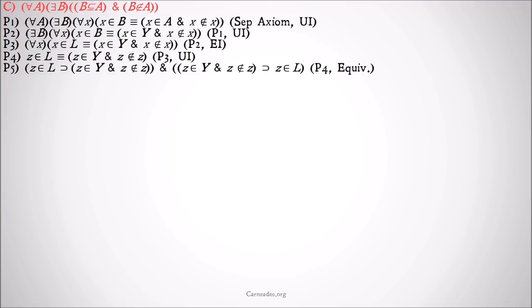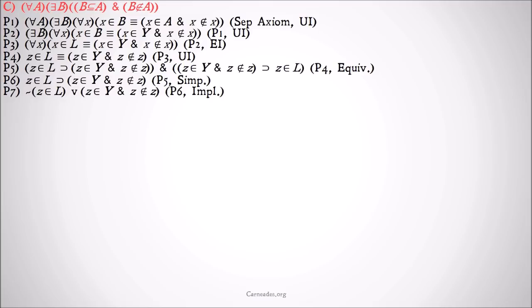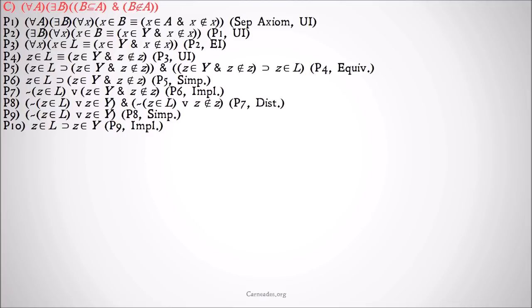Now we're going to split up that equivalence — pull out as many things from this statement as we can. It's a biconditional, so we can conjoin two conditionals to be equivalent to it. We can simplify that down to an implication, then using implication we can turn that into a disjunction — negating the antecedent and keeping the consequent — because all of our logical symbols can be defined in terms of just disjunction and negation. Then we're going to use distribution, because we need to split up that conjunction. We want conjunction to be our main operator in the middle so that we can do simplifications.